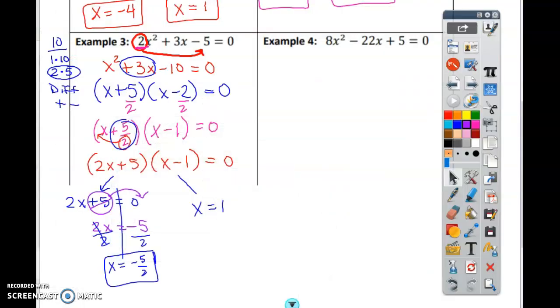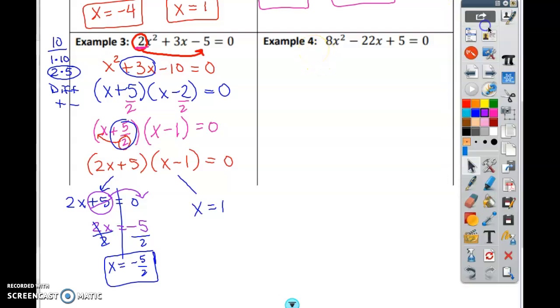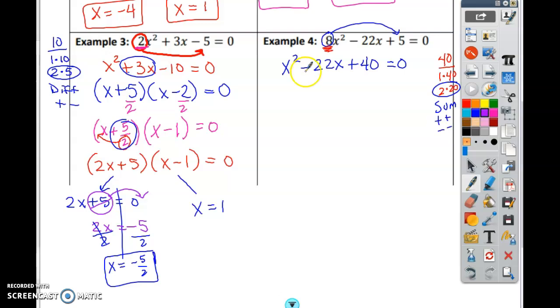Pause the video. I want you to do problem number 4. Try problem number 4 by yourself. First thing you do is multiply 8 times 5. What does that give you? 40. So my equation is x squared minus 22x plus 40 equals 0. And remember, we're going to need that 8 later on. So I need factors of 40 that give me a sum or difference of 22. So I have 1 times 40, I have 2 times 20. And that will work because I need 22. So if I add 2 and 20, that's 22. So it's a sum. So they're both going to be positive or they're both going to be negative. What do you think? This is a negative. So they both have to be negative. So it's going to be x minus 2 and x minus 20 equals 0.